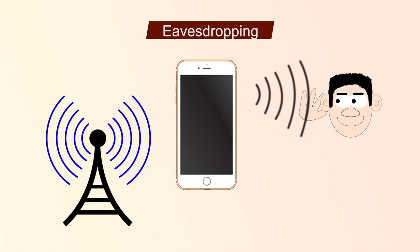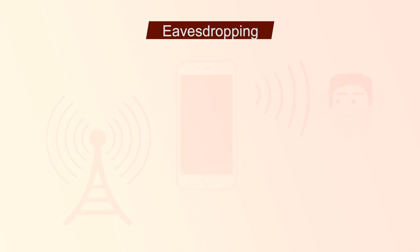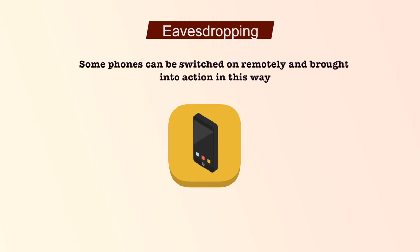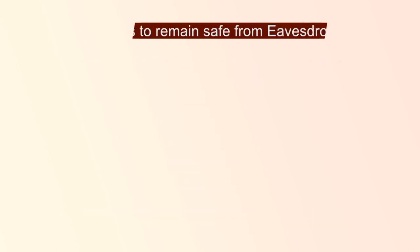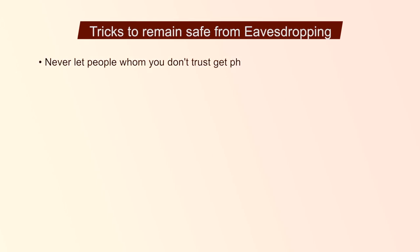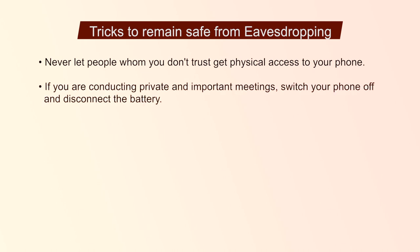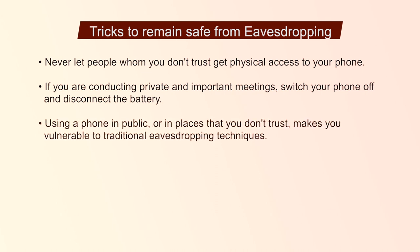Another concern is eavesdropping. Your phone can be set to record and transmit any sounds within the range of its microphone without your knowledge. Some phones can be switched on remotely and brought into action in this way even when they appear to be switched off. Tricks to remain safe from eavesdropping include: never let people whom you don't trust get physical access to your phone, as this is a common way of installing spying software. If you are conducting private and important meetings, switch your phone off and disconnect the battery, or don't carry the phone with you if you can leave it somewhere absolutely safe. Make sure that any person with whom you communicate also employs these safeguards. Also, don't forget that using a phone in public or in places you don't trust makes you vulnerable to traditional eavesdropping techniques or to having your phone stolen.